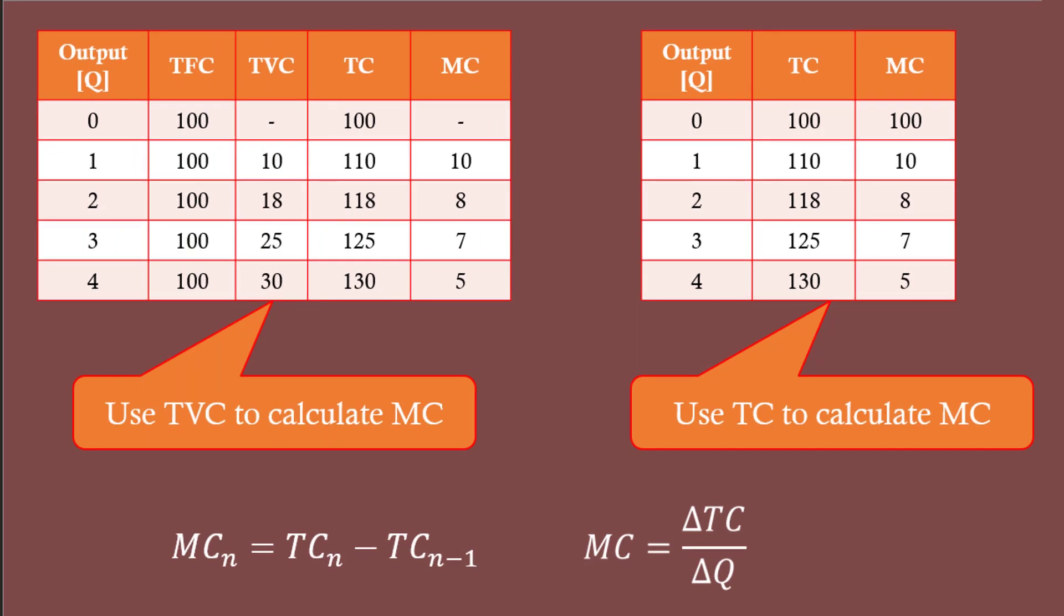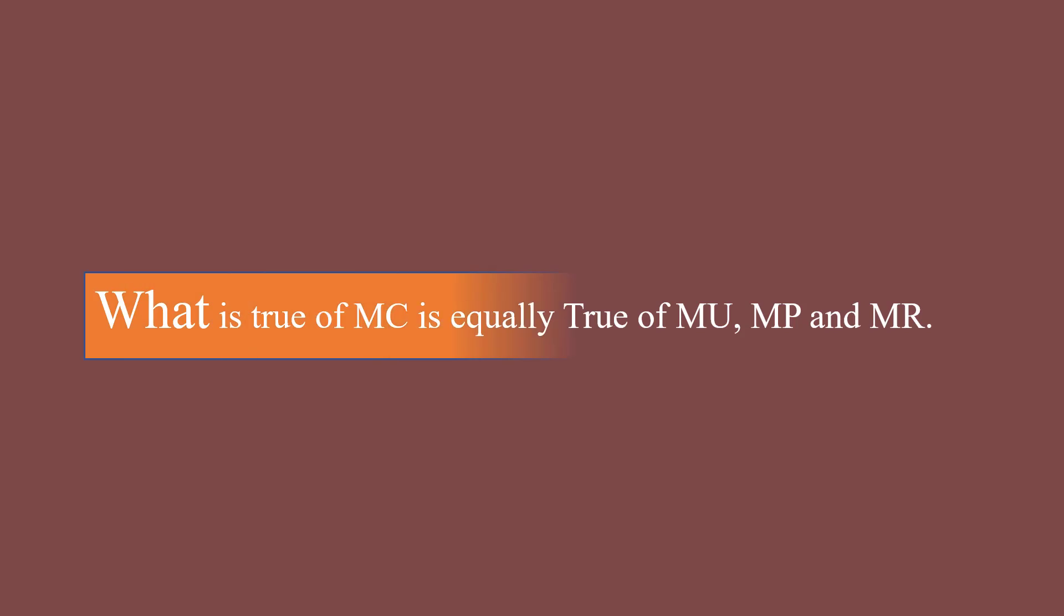In the formula, you will find only the term total cost. So students must know when the term TC represents total variable cost and when it represents total cost as such. Finally, I would like to tell the students what is true of marginal cost is equally true of marginal utility.